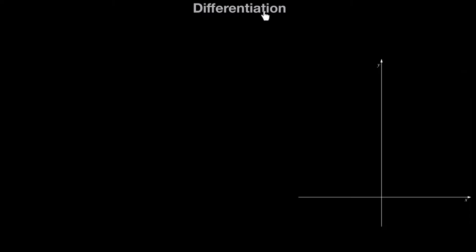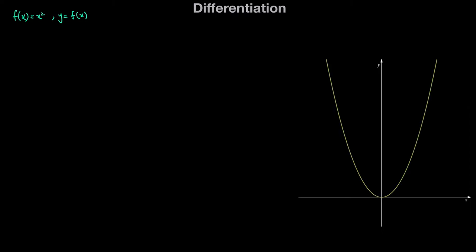Hey guys, so in this video we're going to learn about differentiation. Now what do we mean by differentiation? Let's start by looking at an example of a function. Let's say that I have the function f(x) equal to x squared, and we can say y is equal to f(x). Here I have the graph for y equal to f(x) — in other words I have a parabola here, the curve that has the equation y equal to x squared.